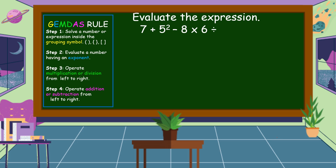Our first example: 7 plus 5 squared minus 8 times 6 divided by open parenthesis 5 plus 7 close parenthesis. To solve this expression, first we're going to solve the number or expression inside the grouping symbol. We have the grouping symbol here and we're going to add 5 and 7. Bringing down 7 plus 5 squared minus 8 times 6 divided by — 5 plus 7 is equal to 12.